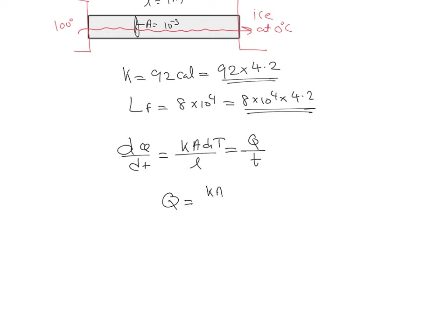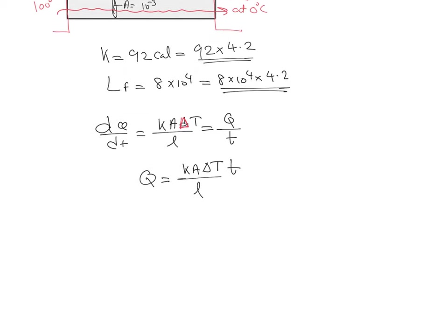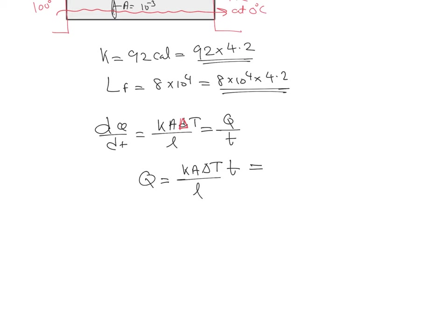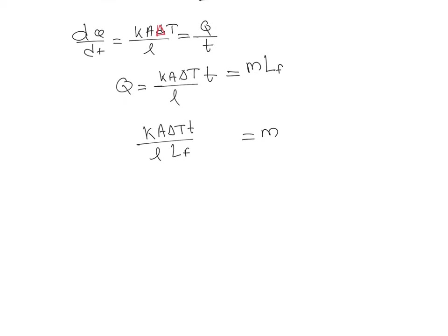So Q = kA·ΔT·t / L. This heat energy is used to melt the ice and convert it into water. Let m be the mass of ice melted and L_f be the latent heat of fusion, then Q = m·L_f, giving us m = kA·ΔT·t / (L · L_f).